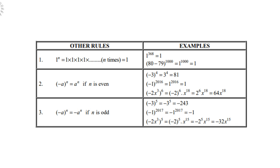But if n is odd, the result keeps the negative. For instance, negative 3 to the power 5 remains negative 243. Negative 1 to the power 2017 remains negative. And negative 2x cubed to the power 5: negative 2 to the power 5 remains negative, giving negative 32x to the power 15.